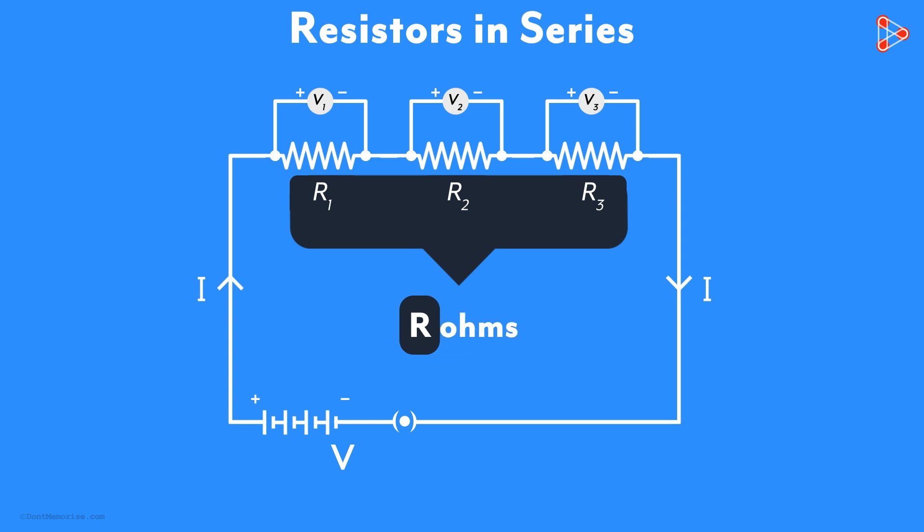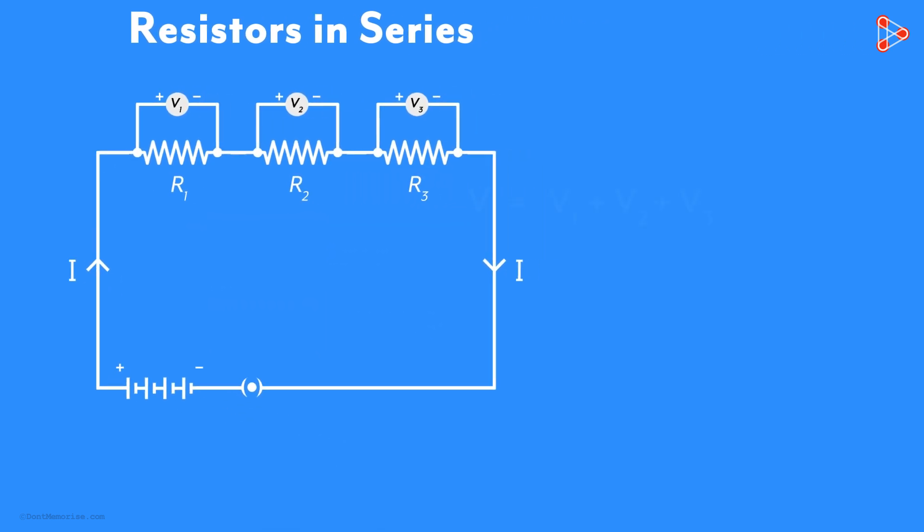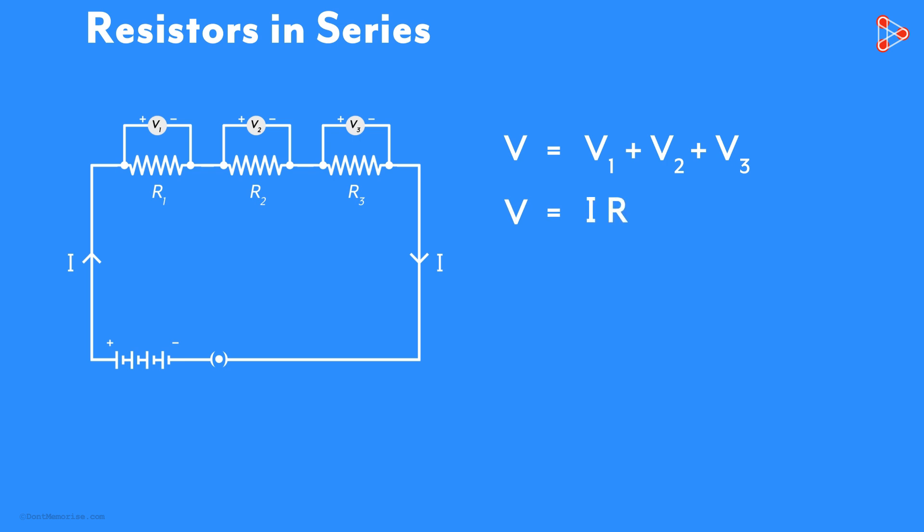We still don't know what R is, but we've just assumed all three together to provide a resistance of R ohms in this circuit. So according to Ohm's law, we can say that V is equal to I times R.